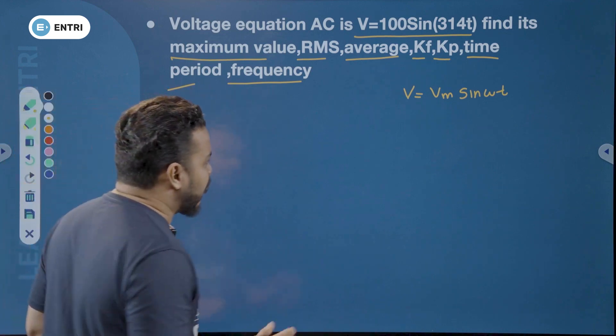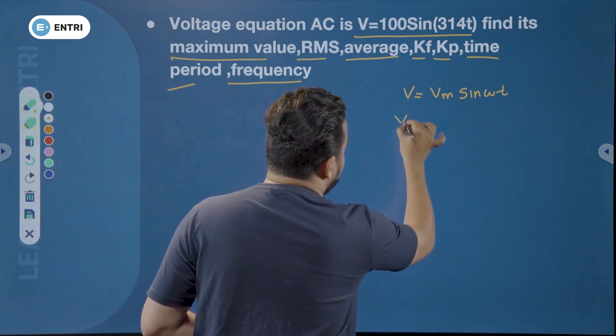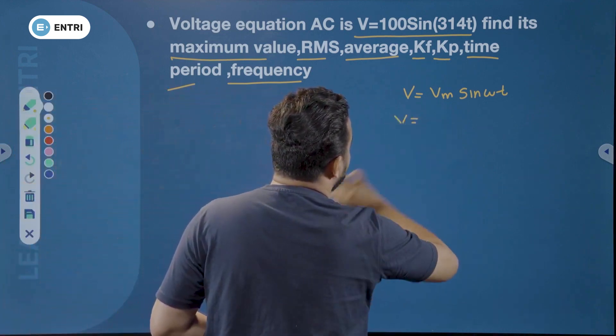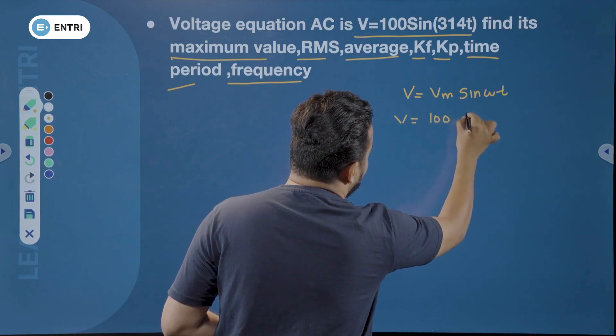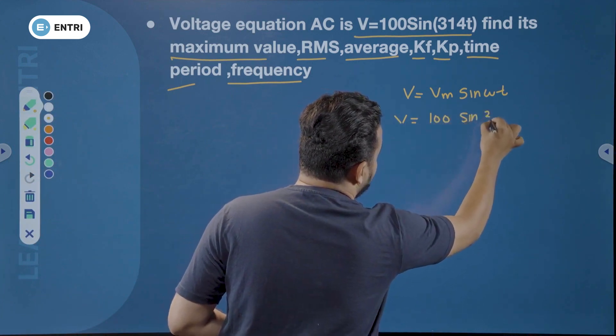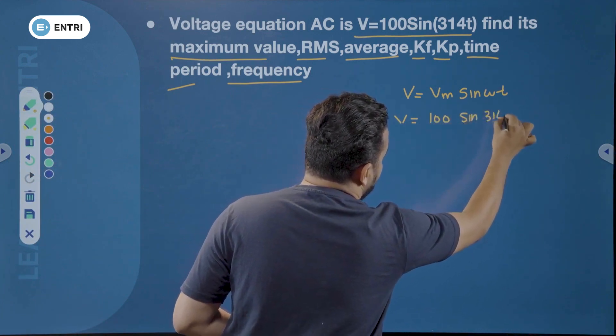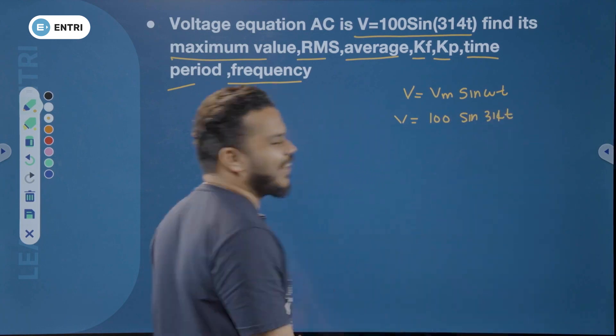So, if you compare the equation: V is equal to 100 sin 314t.